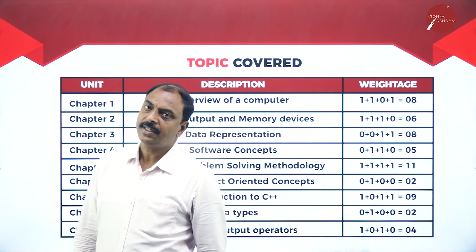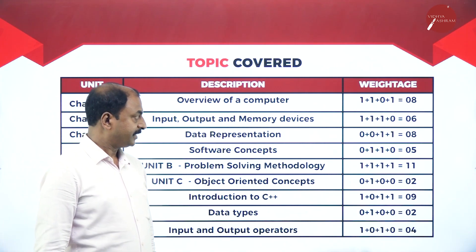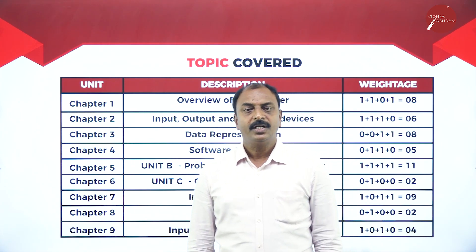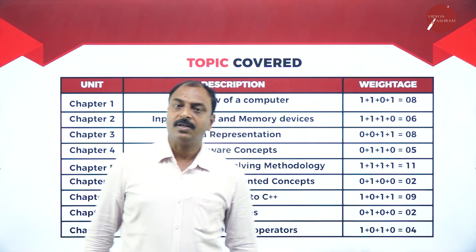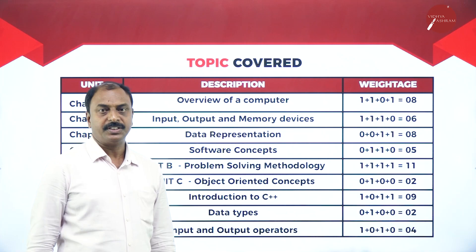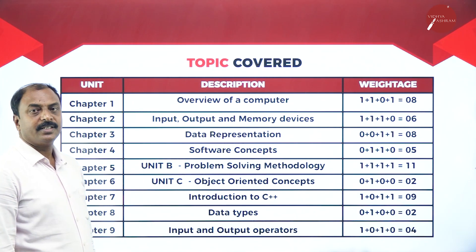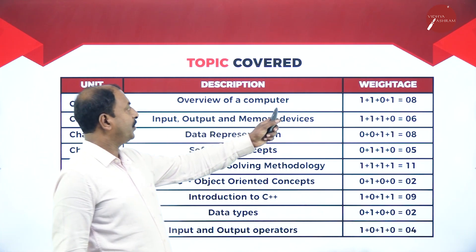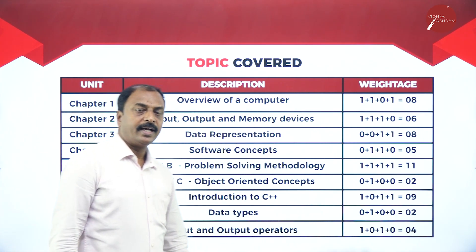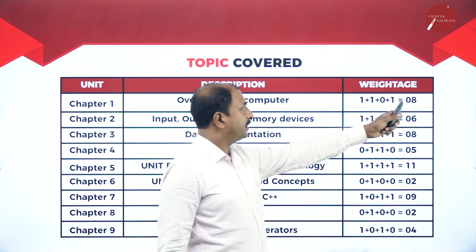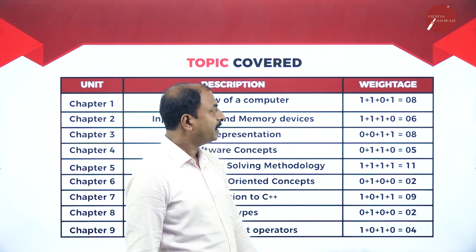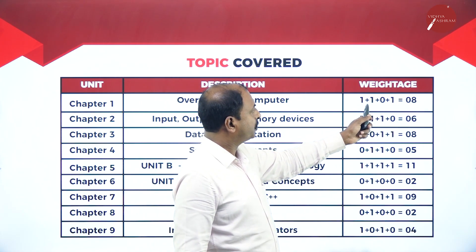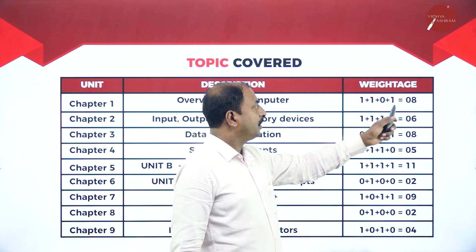Let us see the topics or the syllabus for First PUC Computer Science. All together there are seventeen chapters, divided into different sections. Chapter one is 'Overview of a Computer.' In this chapter you will get one MCQ, one two-marks question, and one five-marks question, so total weightage is eight marks.